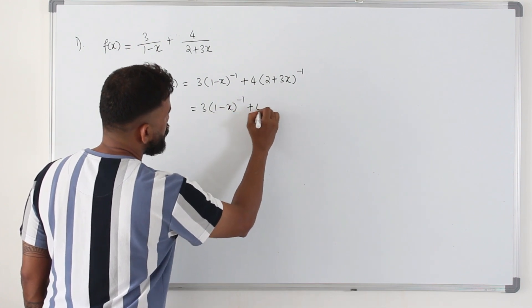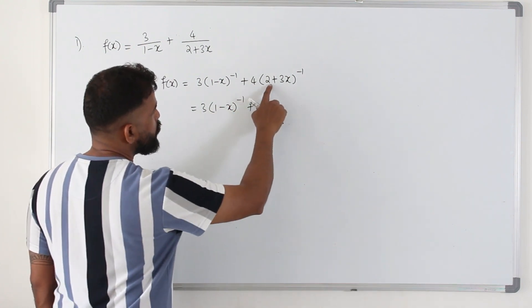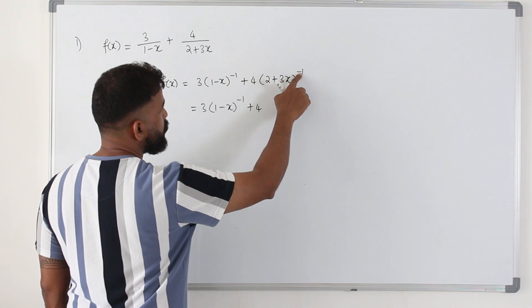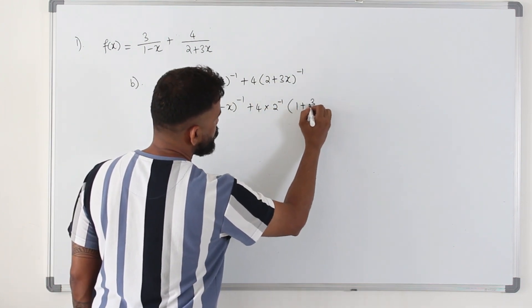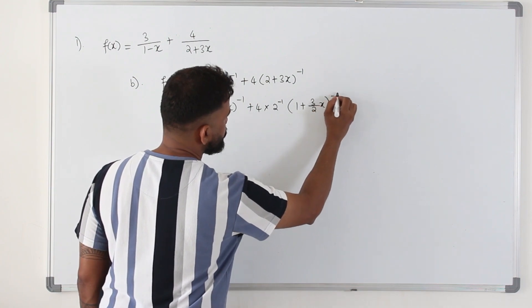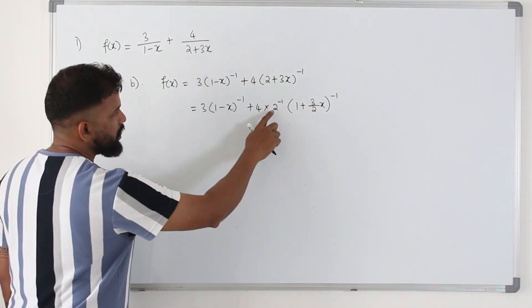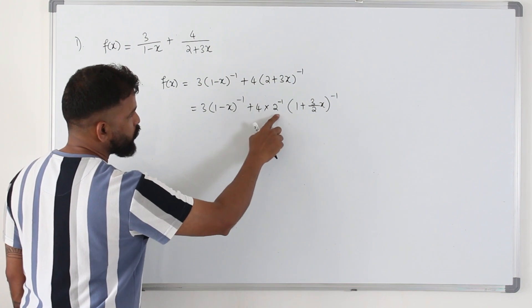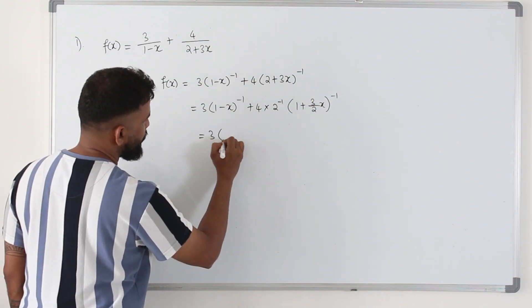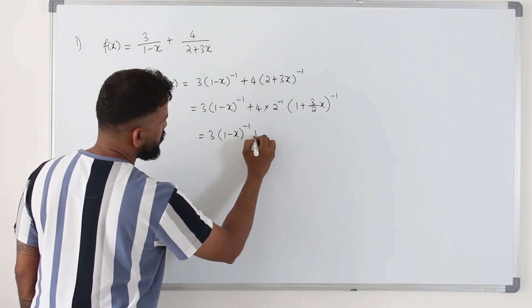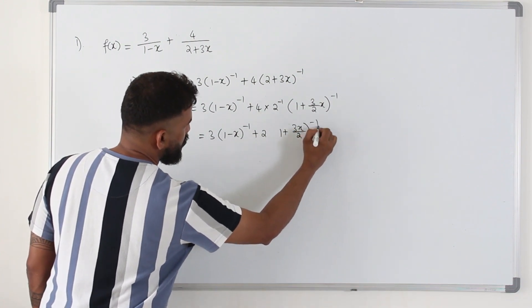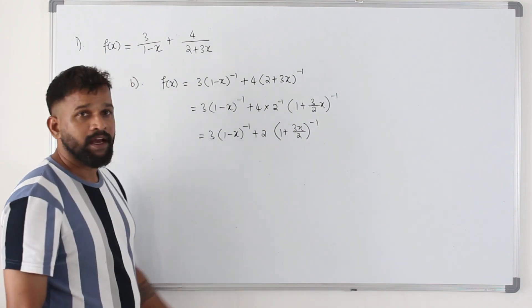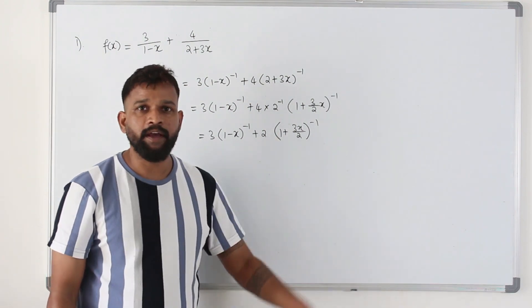This one stays the same. If you take 2 as a common factor it will come out with the power, 2 power negative 1, times 1 plus 3 over 2 x. So it's basically 1 over 2. 4 times 1 over 2 is 2. So we get 3 times 1 minus x power negative 1, times 2 times 1 plus 3x by 2 power negative 1. And then only you can apply the binomial expansion.